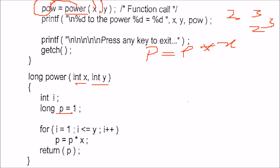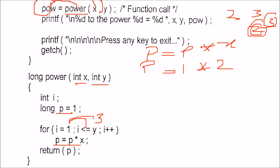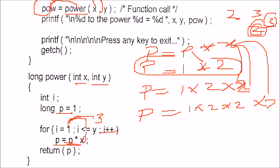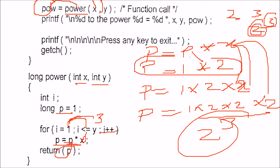Inside the loop, p equals p into x. So in the first iteration p is 1, and p becomes 1 into 2 which is 2. Then i increments to 2, p becomes 2 into 2 which is 4. Then i increments to 3, p becomes 4 into 2 which is 8. So 2 to the power 3 gives 8, and this is the return value which is printed.